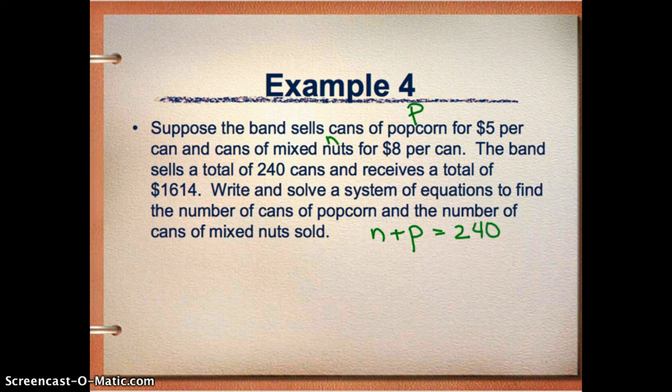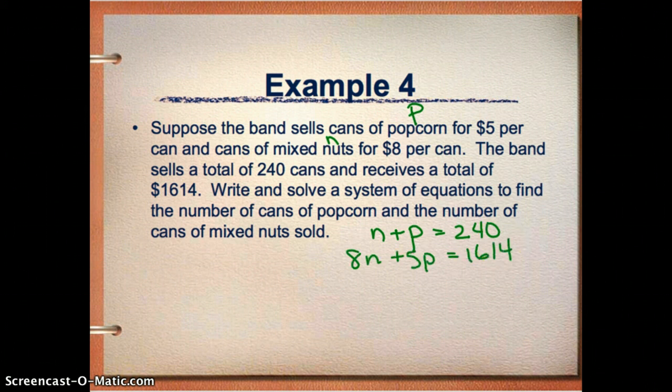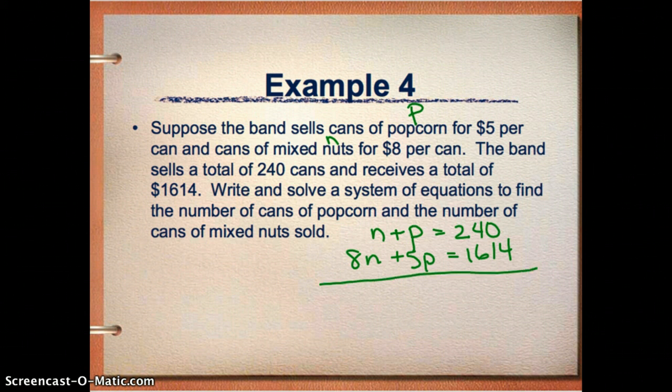So I know that the number of cans of popcorn plus the cans of nuts together has to equal 240 cans. And then the money, 8 times the nuts plus 5 times the popcorn has to equal $1,614.